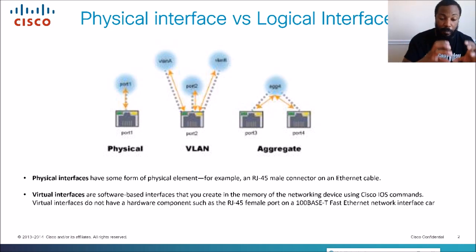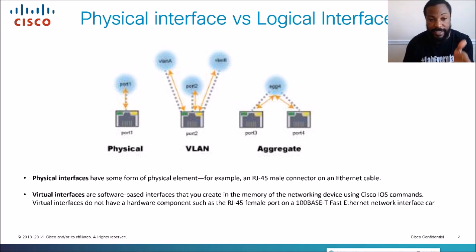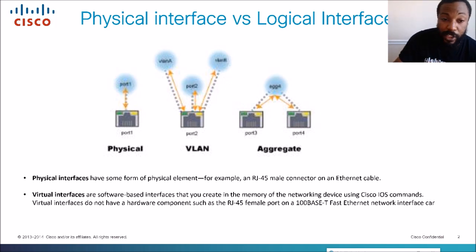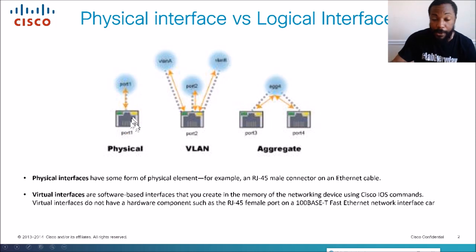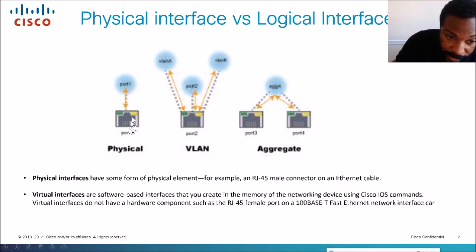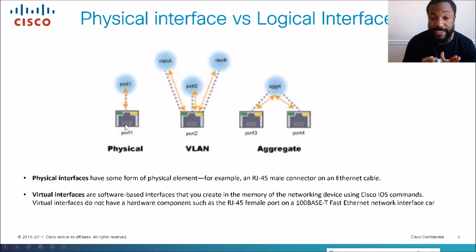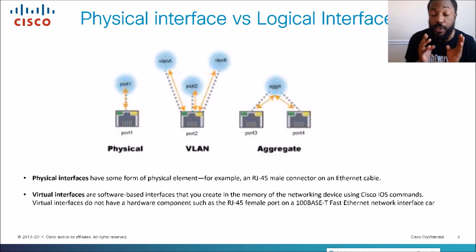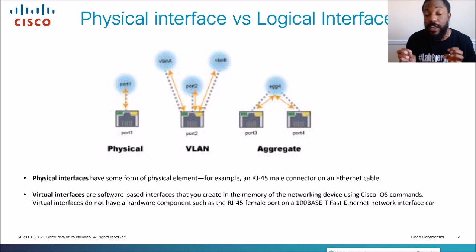Let's talk about the differences between physical interfaces and logical interfaces. A physical interface is basically a port or interface that you can physically touch — it has some form of physical element, for example an RJ45 connector, which you'll find on a switch, router, or ethernet cable.